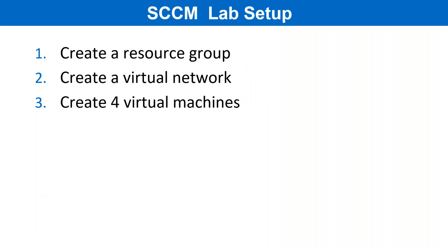The first thing we have to do is to create a resource group. A resource group is a container wherein you can keep all your resources. If you have to delete all the resources, you just delete the container itself and all the resources which are associated to that resource group will get deleted automatically. That's the reason we need to create a resource group. Virtual network is to connect all the computers to the same network.